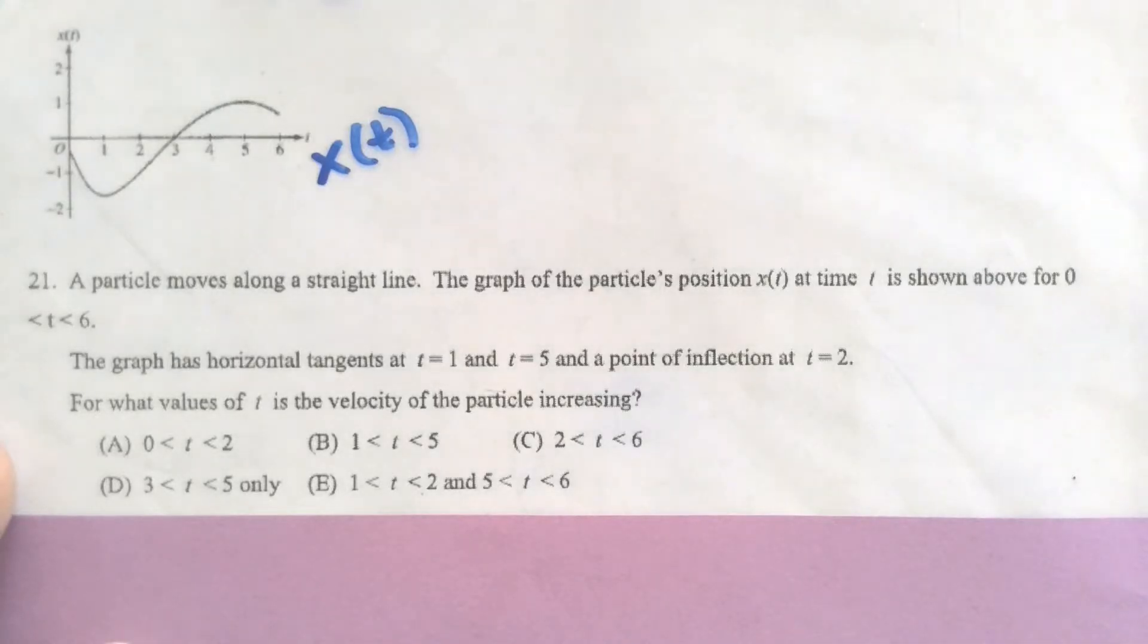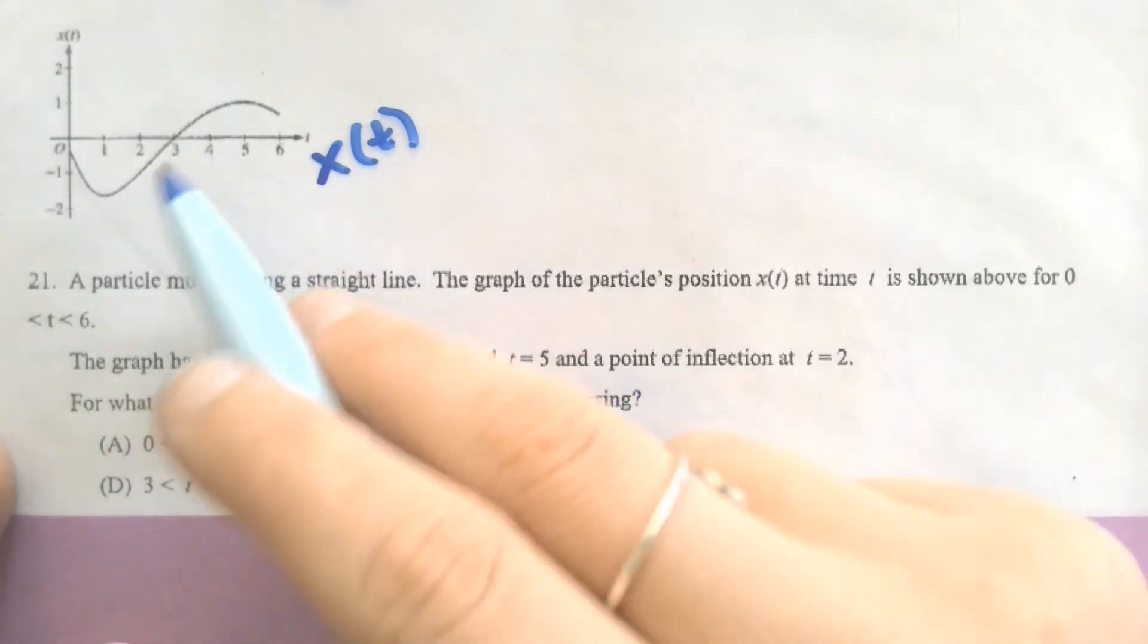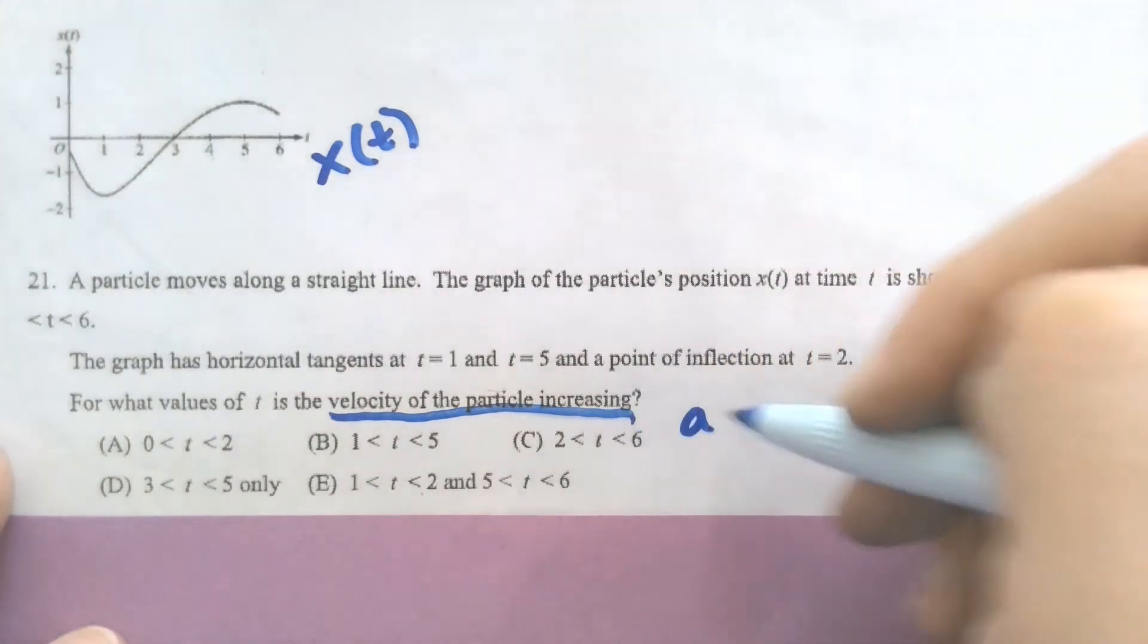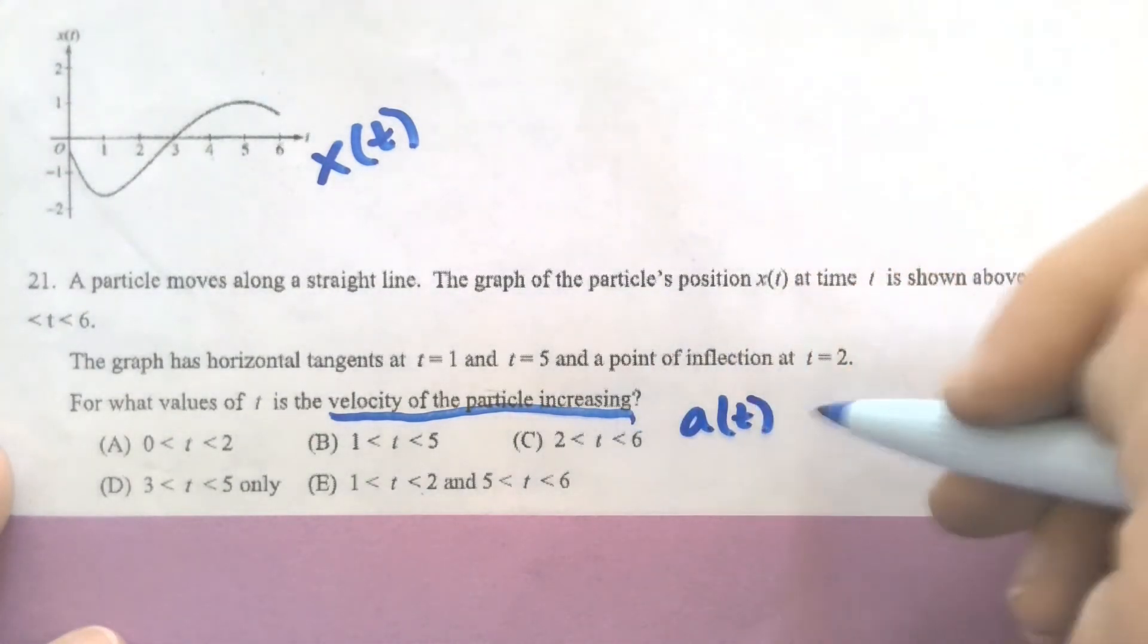Our next example gives us a graph of position. And remember, any time you have a graph like that, write really big somewhere what you're talking about for the graph. It tells us that there are horizontal tangents at 1 and 5, and then a point of inflection at 2. The question it's asking is, when is the velocity of the particle increasing? So you've got to be careful with this wording, because it's not asking for when the velocity is positive. It wants to know where the velocity is increasing, which means that its slope is positive, or A of t is positive.